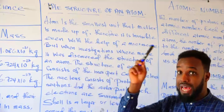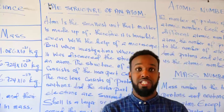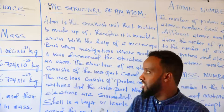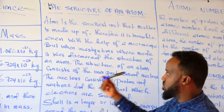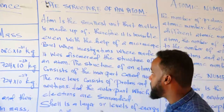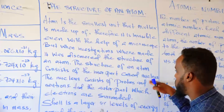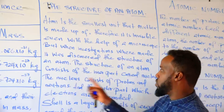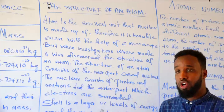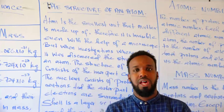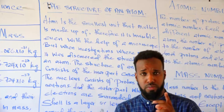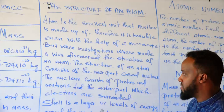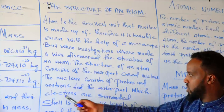Investigations were made and the structure of an atom was discovered. The structure of an atom consists of an inner part called the nucleus. The nucleus consists of protons and neutrons. The outer part of the atom is surrounded by electrons.